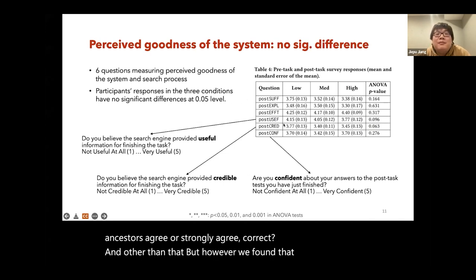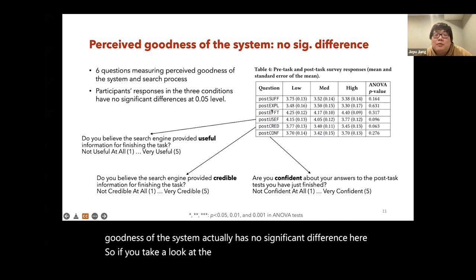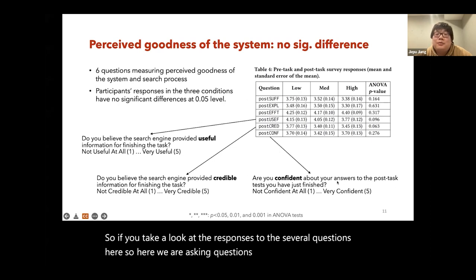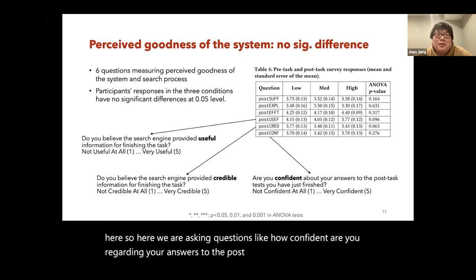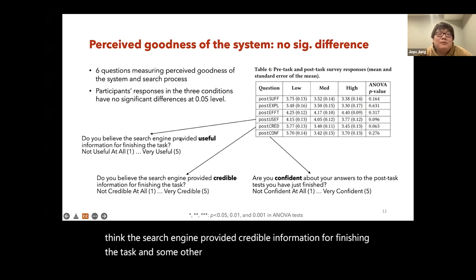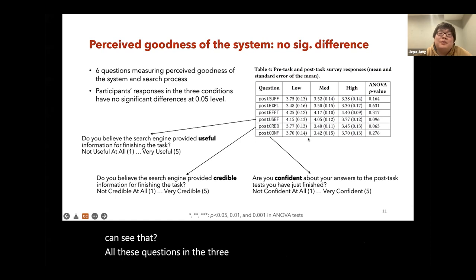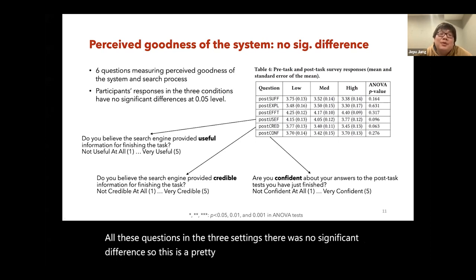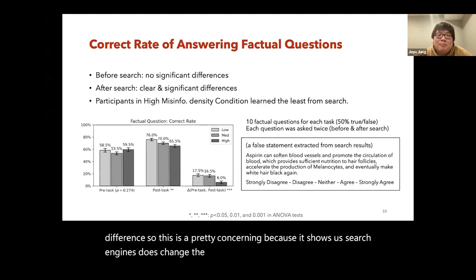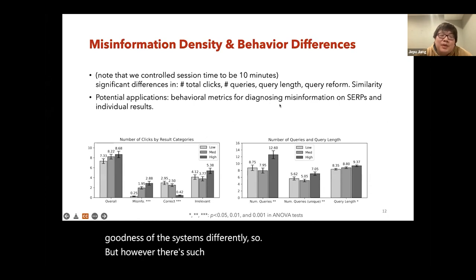However, the perceived goodness of the system showed no significant difference. Looking at responses to questions such as 'How confident are you regarding your answers to the post-test questions?', 'Do you think the search engine provided credible information?', and 'Do you feel the information provided was useful?' — for all these questions across the three settings, there was no significant difference. This is concerning because it shows search engines do change people's perceptions about factual information, yet people do not seem to perceive the goodness of the systems differently.